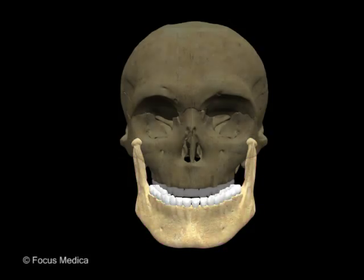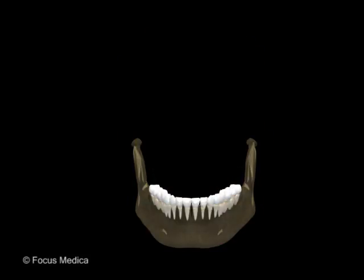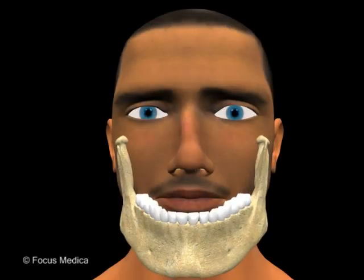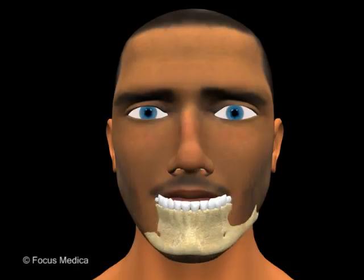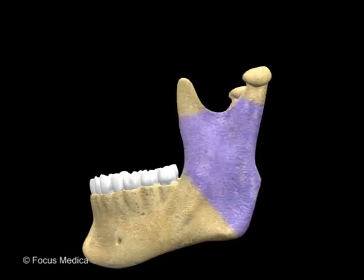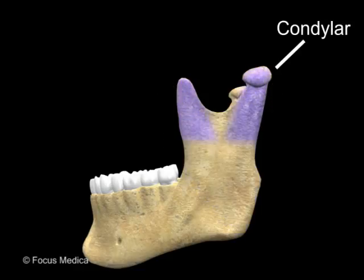The mandible is the lower jaw bone and provides sockets for the lower set of teeth. It is large and strong and also provides the contour for the lower part of the face. It consists of the body and ramus. The ramus gives two projections superiorly: the condylar and coronoid processes.